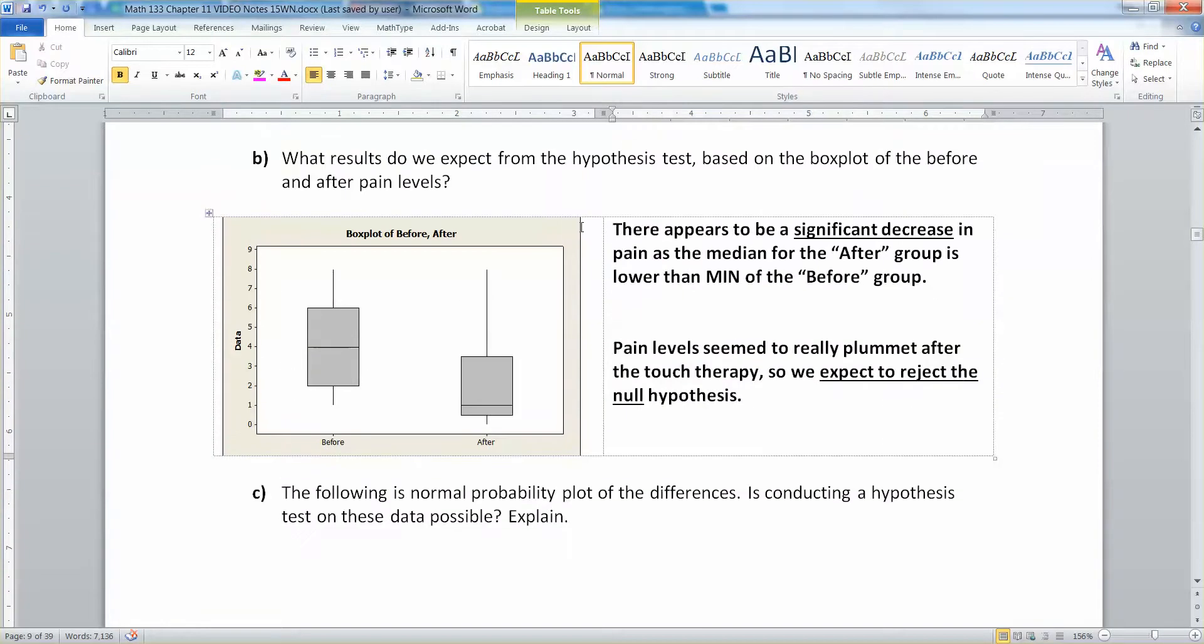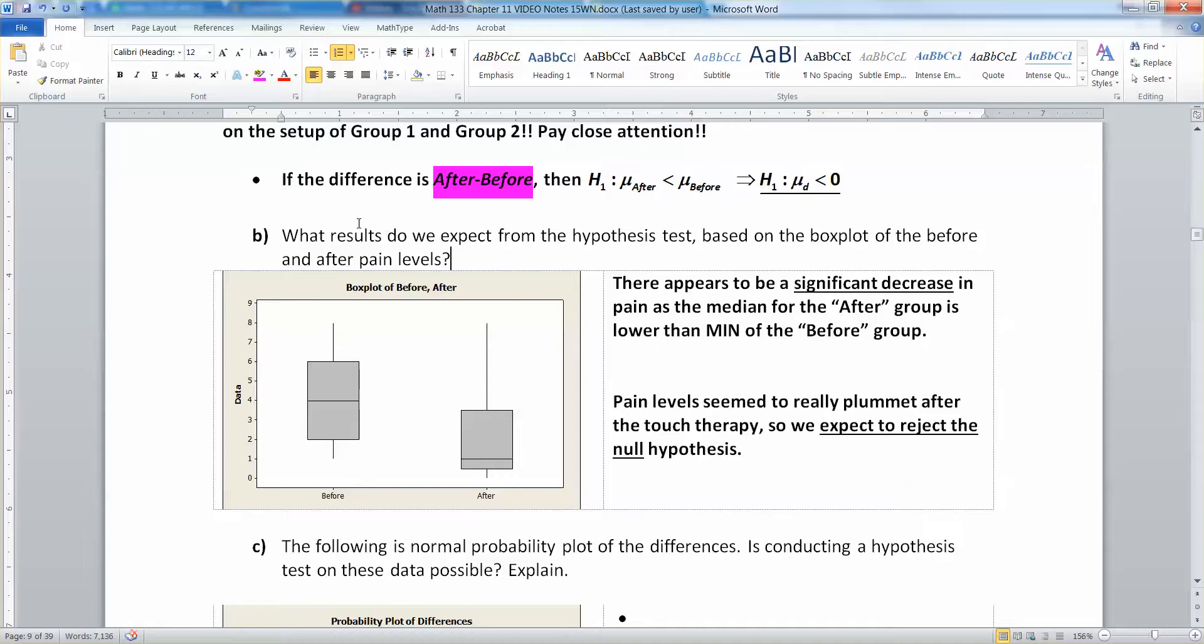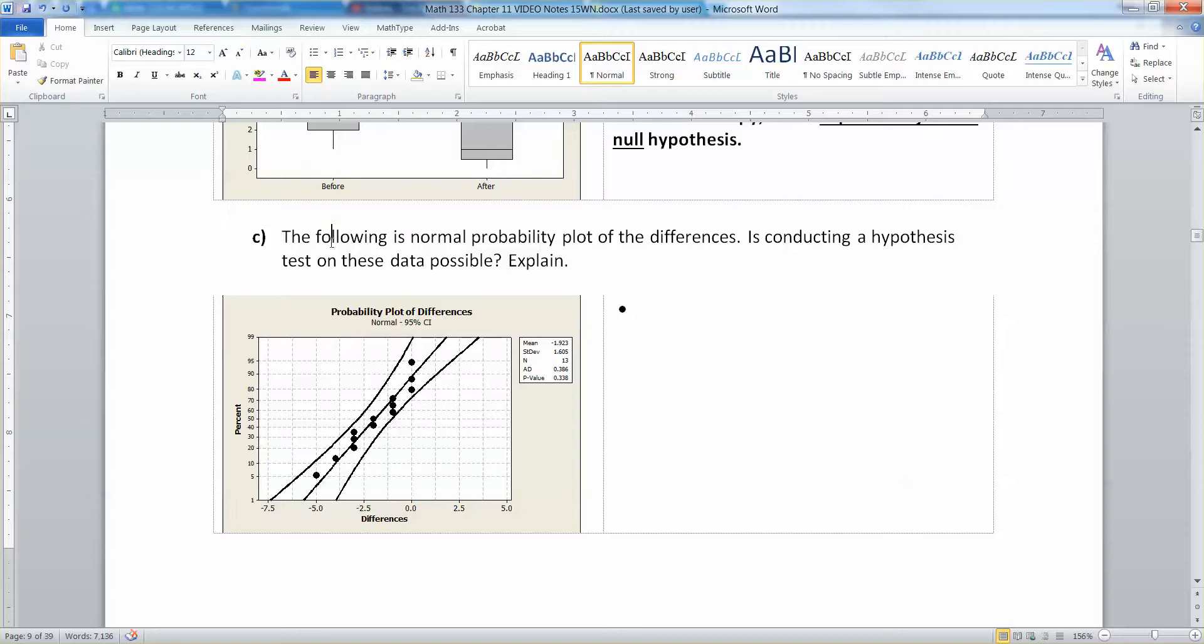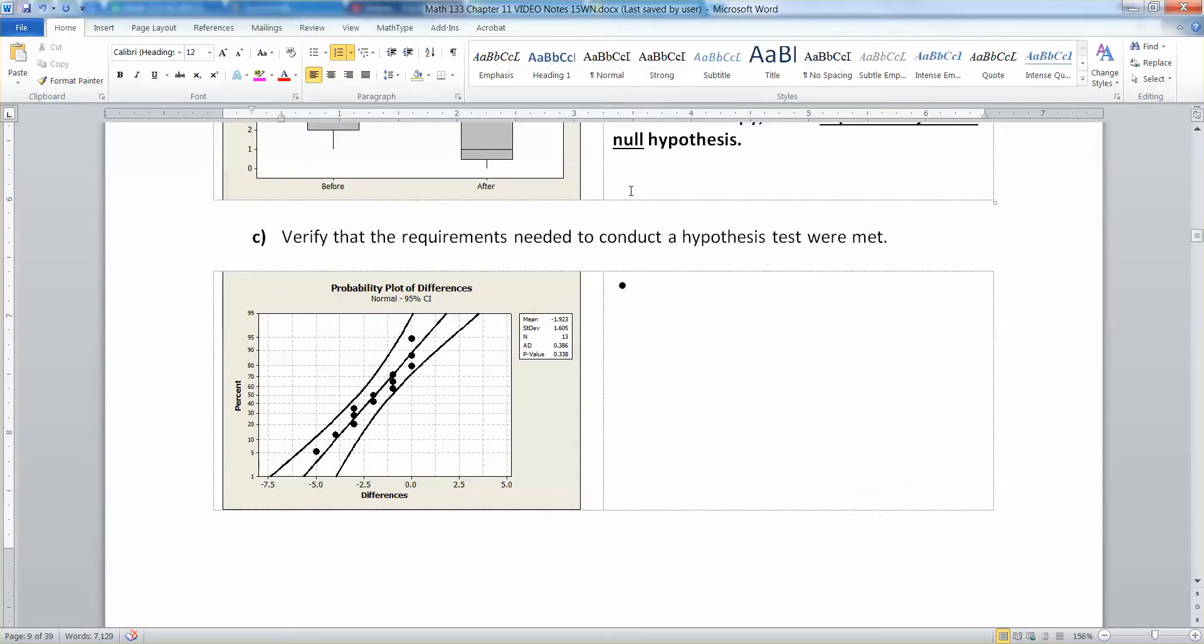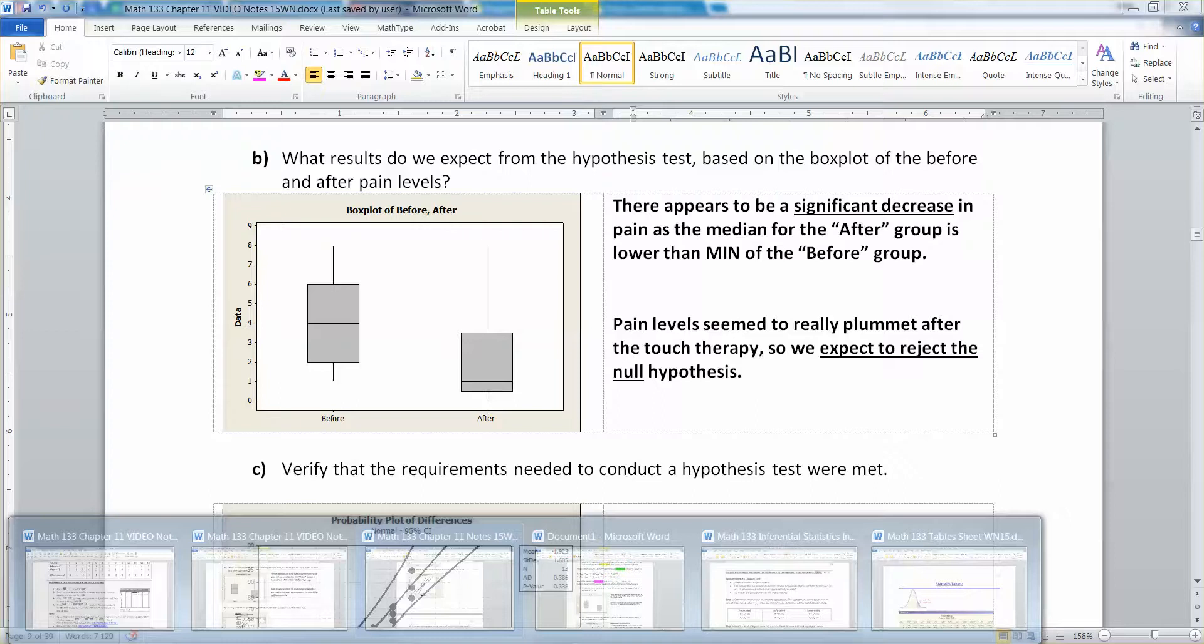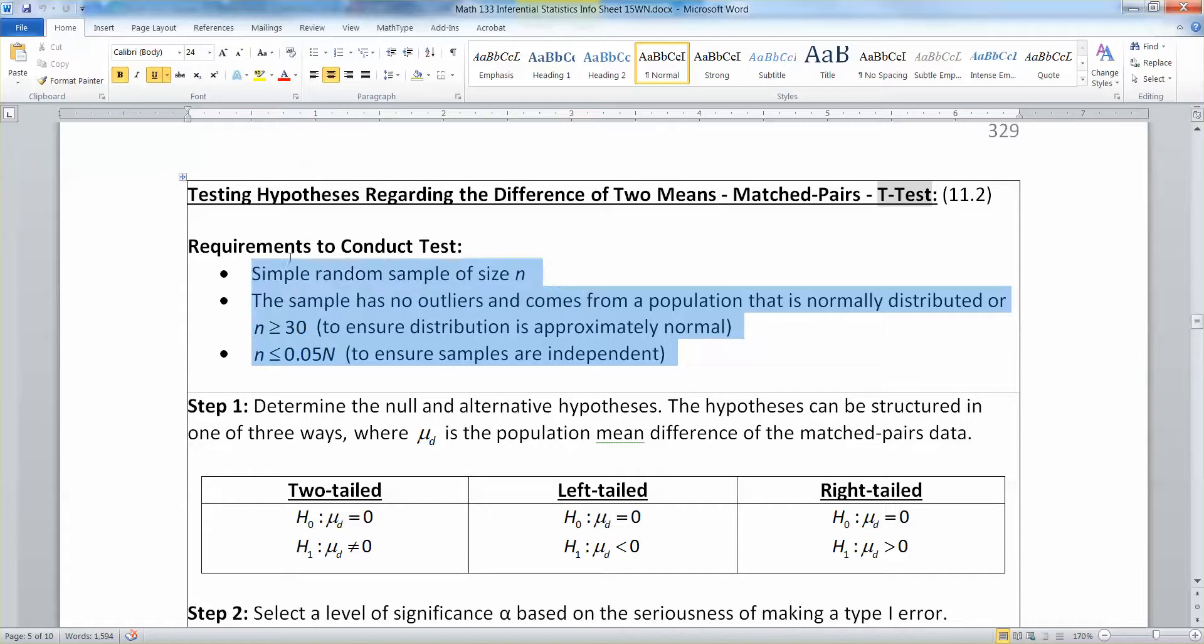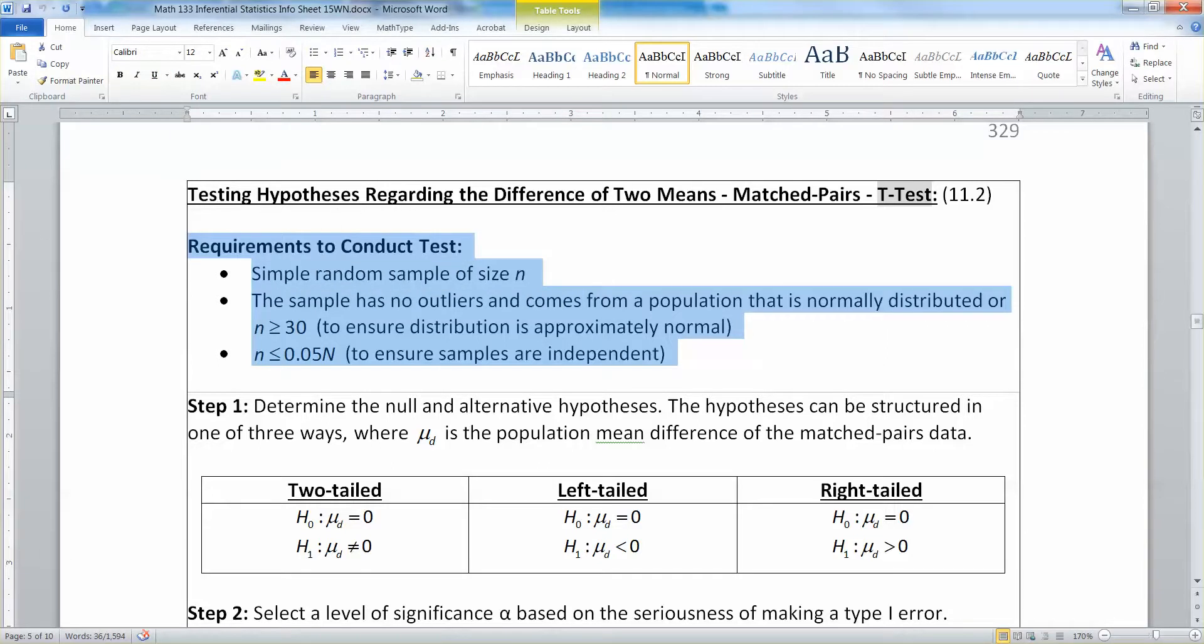The following is a normal probability plot. Is conducting a hypothesis test on these data possible? This question was changed to verify that the requirements needed to conduct a hypothesis test were met. So it's not just about whether the data are normal, but everything else as well. I'm going to bring up my inferential statistics packet. These are the requirements needed to conduct a hypothesis test for the mean differences. We need to see if we have all three of them.